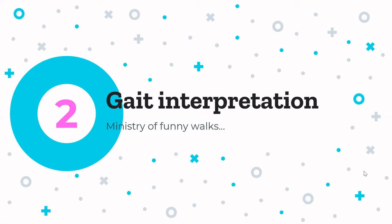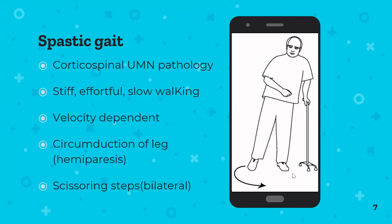For OSCEs, ward encounters, or exam questions asking what a patient's gait indicates about underlying pathology, it's useful to break down examples of abnormal gaits — what they look like and what's causing them. Neurology experience outside of stroke wards can be limited, so videos can help demonstrate these presentations.